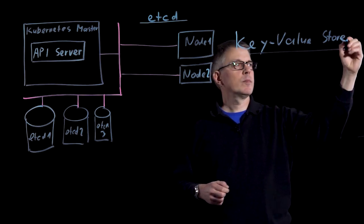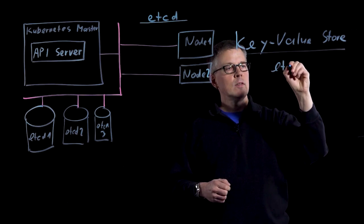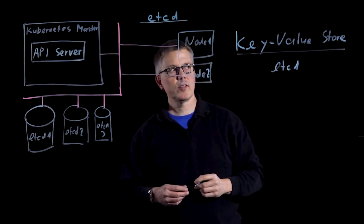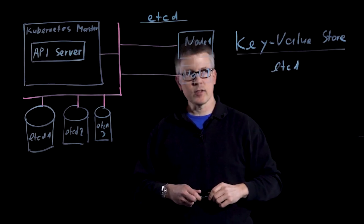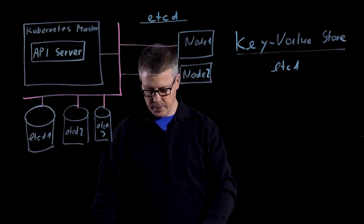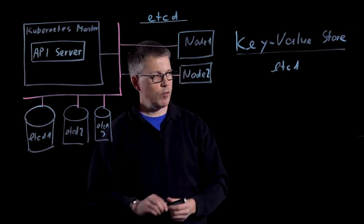In this case, etcd. There are other ones, but etcd is the standard one which Kubernetes is using. So what does that mean, having a key and a value?